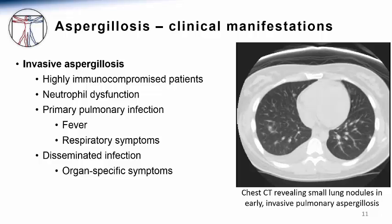The disease typically begins in the lungs at the site of spore entry and presents with a very non-specific group of respiratory symptoms. Without recognition and treatment, the disease can progress to extensively involve the lungs, potentially disseminating to other organs. The symptoms of disseminated disease will reflect the organs that are involved. For example, the most dreaded form is spread to the central nervous system, resulting in focal neurological signs or even altered levels of consciousness.